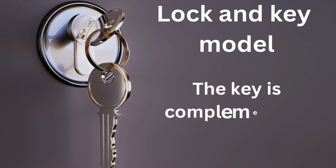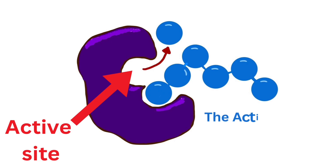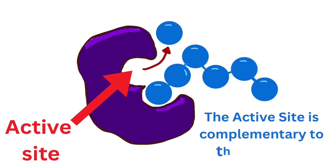We say that each key is complementary to one lock. Your key will open your front door, but it won't open anyone else's. In a similar way, the active site is complementary to the substrate because one substrate will fit into the active site of one enzyme. Each enzyme has its own shape and will only fit one particular substrate.